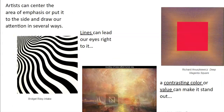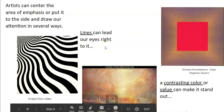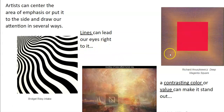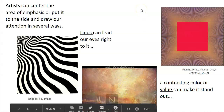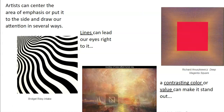Artists can center the area of emphasis, like the red square right in the center, or put it to the side and draw our attention in different ways. Lines can lead our eyes right to it, or a contrasting color or value — this bright light is really calling our attention to the area of emphasis. So we're going to use all of those ideas to make a magnificent piece of artwork that has unity, a clear area of emphasis, and also uses value and creates some space. All right, let's get started.